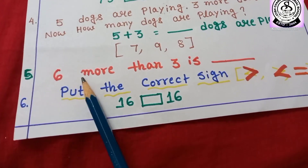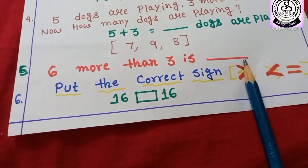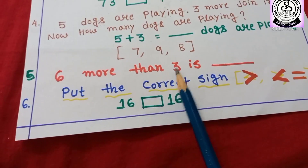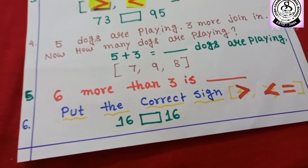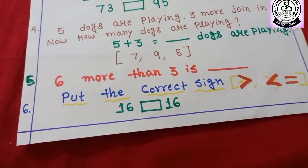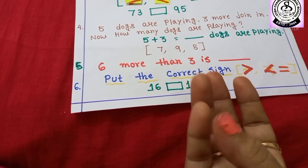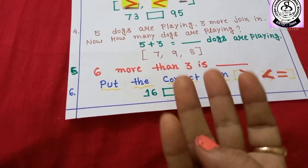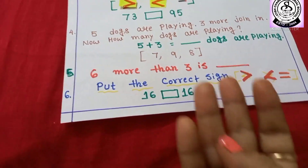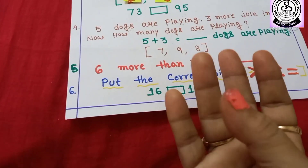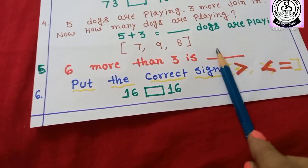Number 5: 6 more than 3 is dash. 6 more than 3 means after 6 you have to count 3 more finger marks. 1, 2, 3, 4, 5, 6 — after 6 count 3 more: 7, 8, and 9. So here you have to write 9.